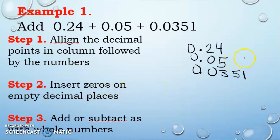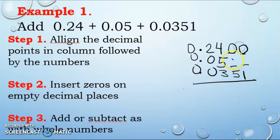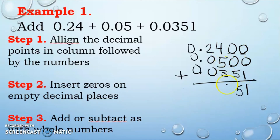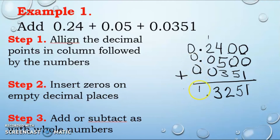Insert zeros on the empty decimal places — those spots without matching digits. We add zeros so all numbers are aligned and we are not confused. Now with all numbers having 4 decimal digits, we are ready to add. 0 plus 0 plus 1 is 1; 0 plus 0 plus 5 is 5; 4 plus 5 plus 3 is 12, carry 1; 2 plus 1 plus 0 plus 0 is 3; bring down the decimal point and the leading 0. That is your final answer.